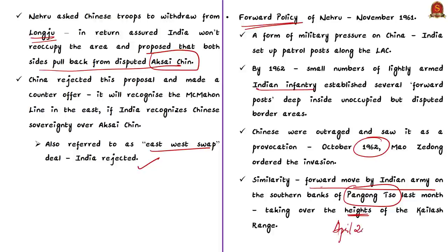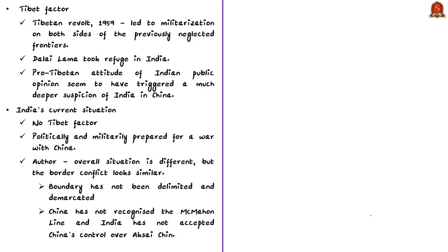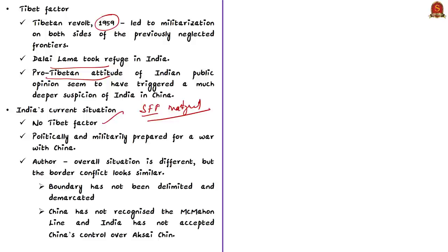Along with the above reasons, the Tibet factor also played a major role in the clashes leading to the 1962 war. India's soft corner towards Tibet and the Dalai Lama's refuge in India triggered clashes and increased mutual suspicion between India and China. Now in 2020, there is no Tibet factor as such, but a Tibetan-origin person serving in the Special Frontier Force of India was martyred, and a public funeral held in India is said to have repercussions in Tibet. China is worried about Tibet's pro-India stand.